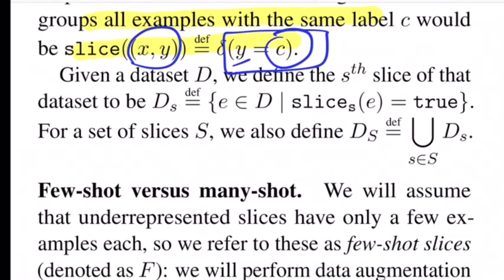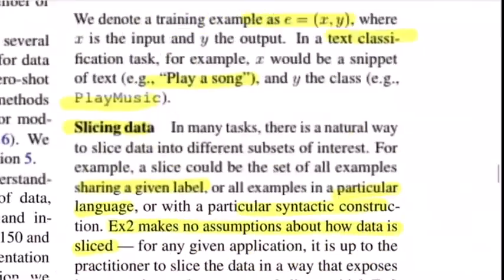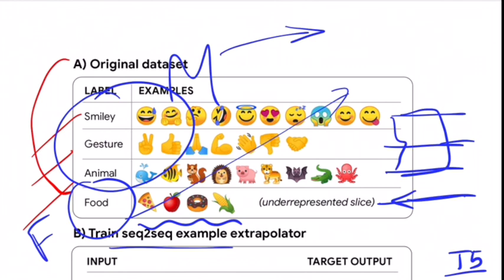Once you put every example into a certain slice, the union of all slices becomes your D_s, which is the dataset of all slices. Also it's mentioned that all the few-shot slices are referred as F, and all other slices that need not be augmented, called many-shot slices, are represented by M. The example extrapolator EX2 is only trained on M slices and the model never sees anything from the F set. In the emoji example, these three classes would make up M and this would make up F because it's the underrepresented slice. The model tuned on top of T5 is basically from set M and doesn't see F at any point. But once trained, it is expected to generalize well for set F.